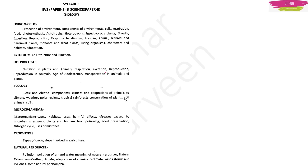Now let us see Biology. This is EVS for Paper 1 and comes under Science for Paper 2. The Biology topics are: Living Gold (living organisms), Cytology, Life Processes, Ecology, Microorganisms, Crops, and Natural Resources. This was all the syllabus for EVS Paper 1 and Science Paper 2.